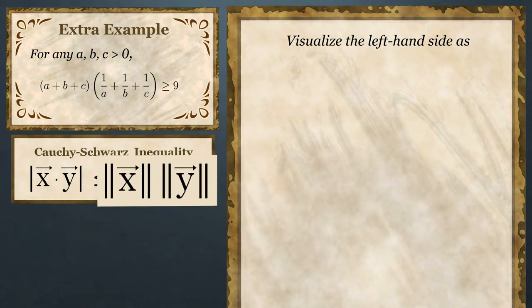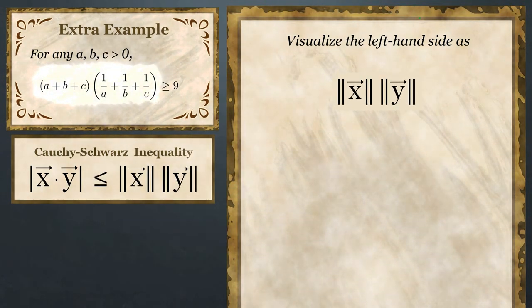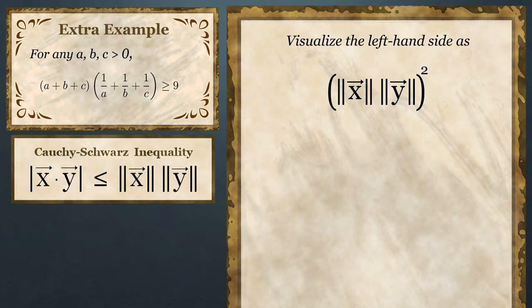Proof. The key is to visualize the left-hand side as the square of a product of norms.